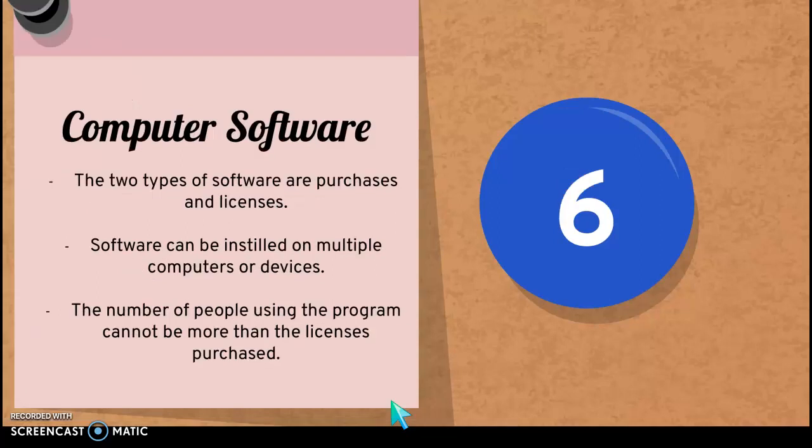Computer software is another thing you need to be aware of. We actually do have software at school — some are outright purchases where we have paid the company to use their products, and others are licenses. A license would be something like a subscription to Eduphoria, and we have to have enough licenses for every kid. So if there are 25 of you, I have to have 25 licenses. I can't have 25 licenses and 32 kids and try to make that work — that wouldn't be legal.